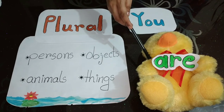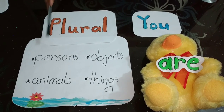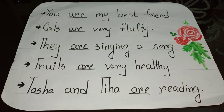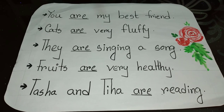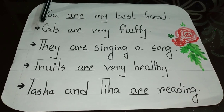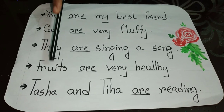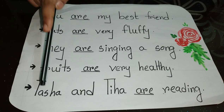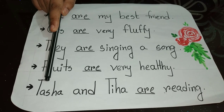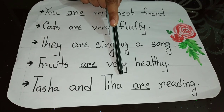Are likes to hang around with 'you' and all plurals. So Are has a great bonding with 'you' and plural persons, objects, animals, and things. For example: You are my best friend. Cats are very fluffy — here 'cats' indicates more than one animal, it's a plural noun. They are singing a song — 'they' indicates more than one person. Fruits are very healthy. Tasha and Tisha are reading — here we have two names which indicate a plural noun. As Are likes to stay with plurals, it will sit after every plural noun.